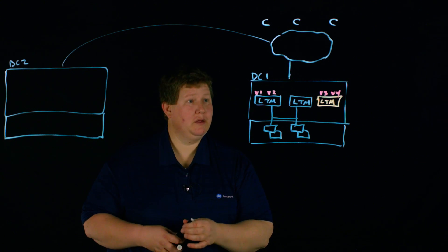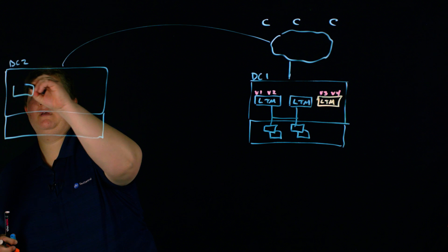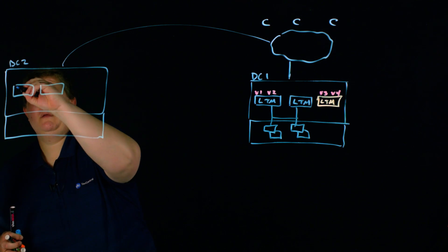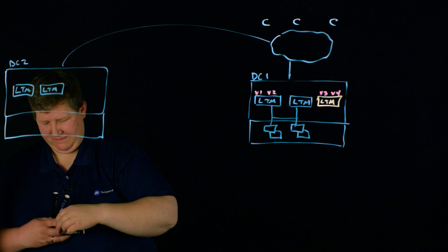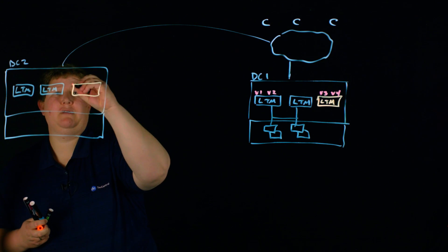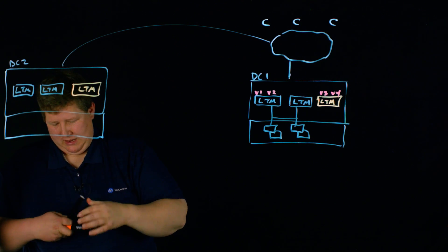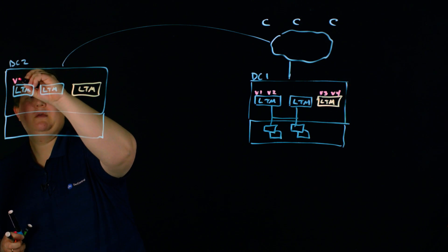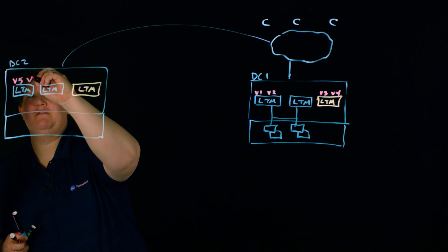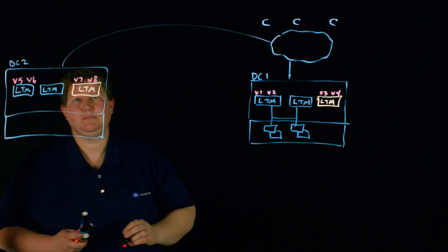And over here in this other data center would be hopefully at least a highly available experience for those same apps. So in this case, we have, say we have an LTM, and then we have that other LTM for a different business unit. And just assume this one also is an HA. And then you have other virtual servers over here. We'll call this V5 and V6, and then V7 and V8.